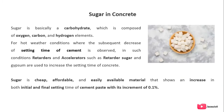Sugar is basically a carbohydrate composed of oxygen, carbon, and hydrogen elements. For hot weather conditions where a decrease in setting time of cement is observed, retarders and accelerators such as sugar and gypsum are used to increase the setting time of concrete. Sugar is a cheap, affordable, and easily available material that shows an increase in both initial and final setting time of cement paste with its increment of 0.1%.